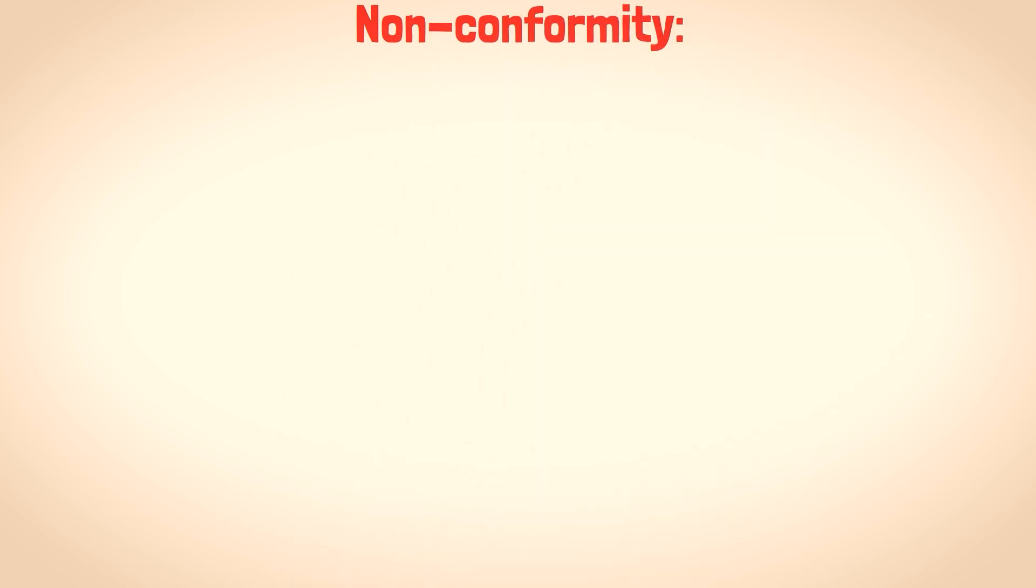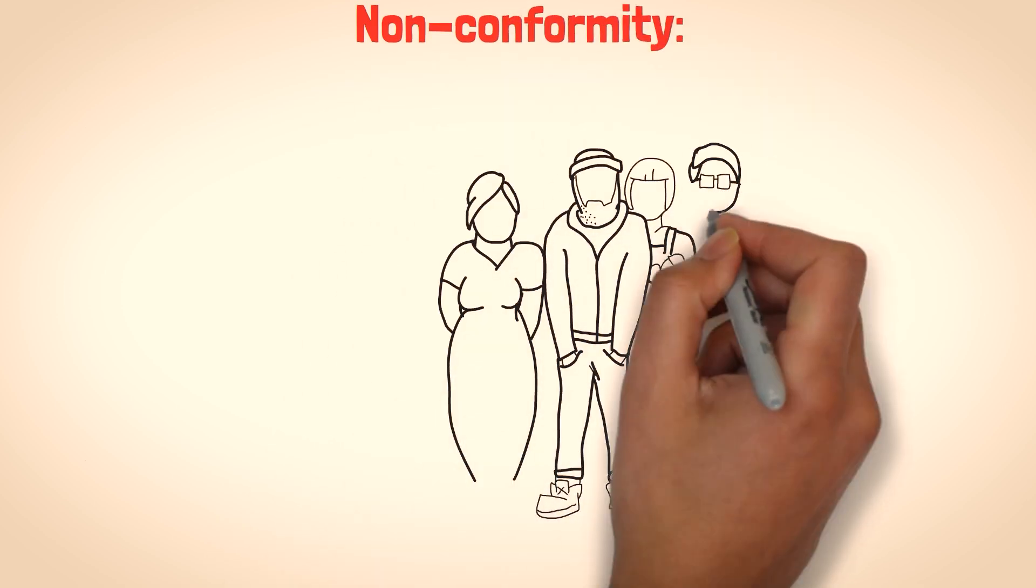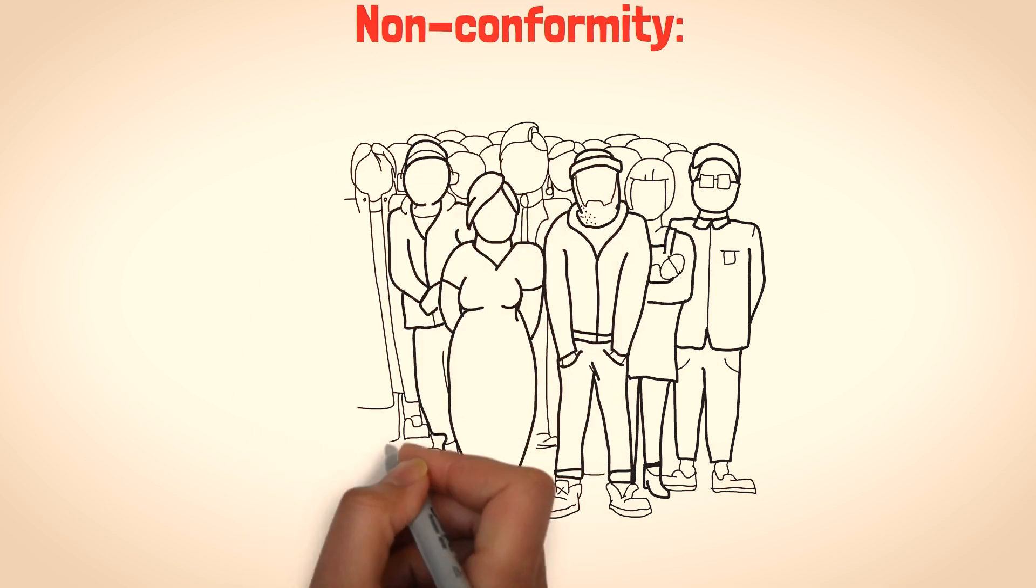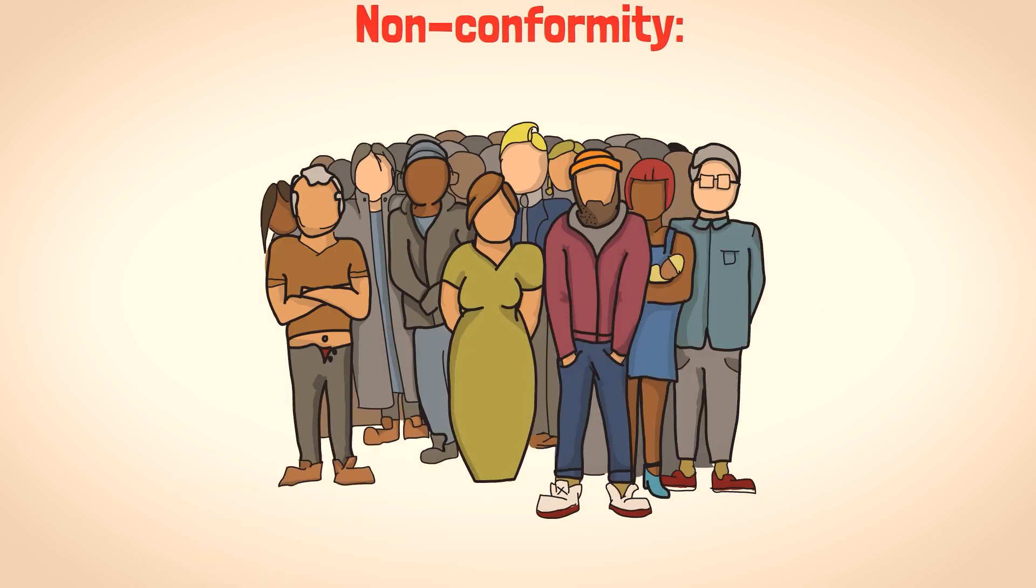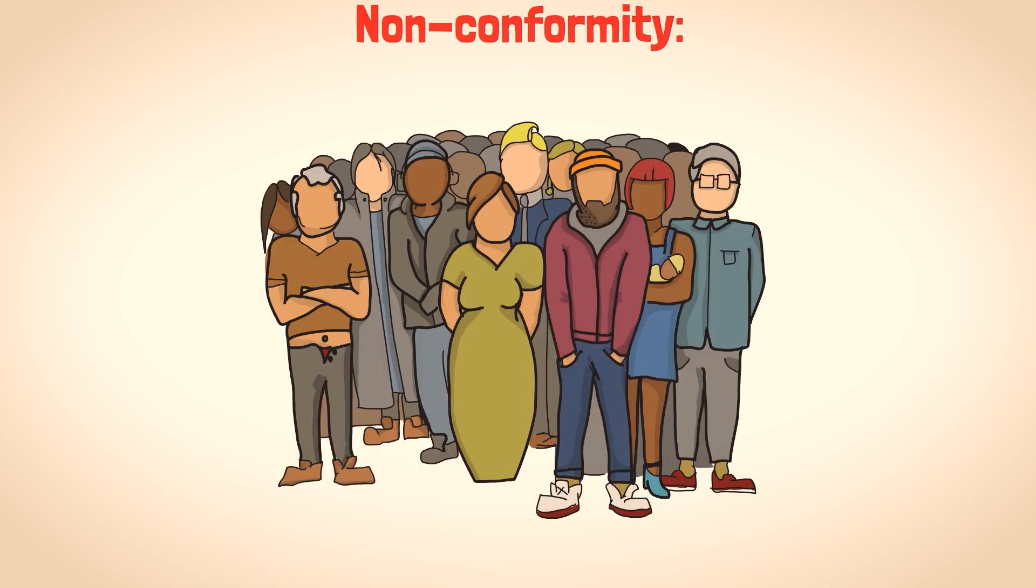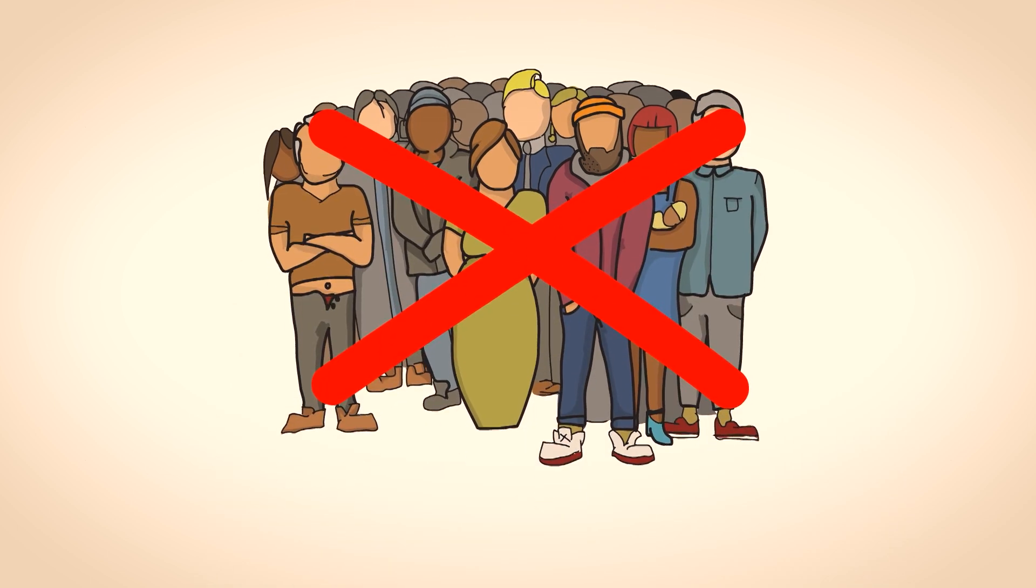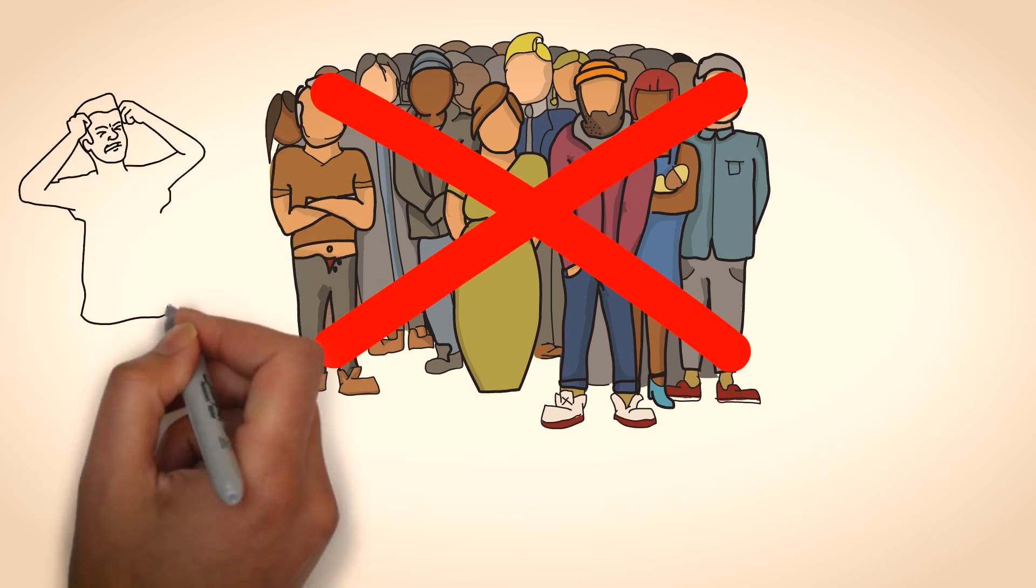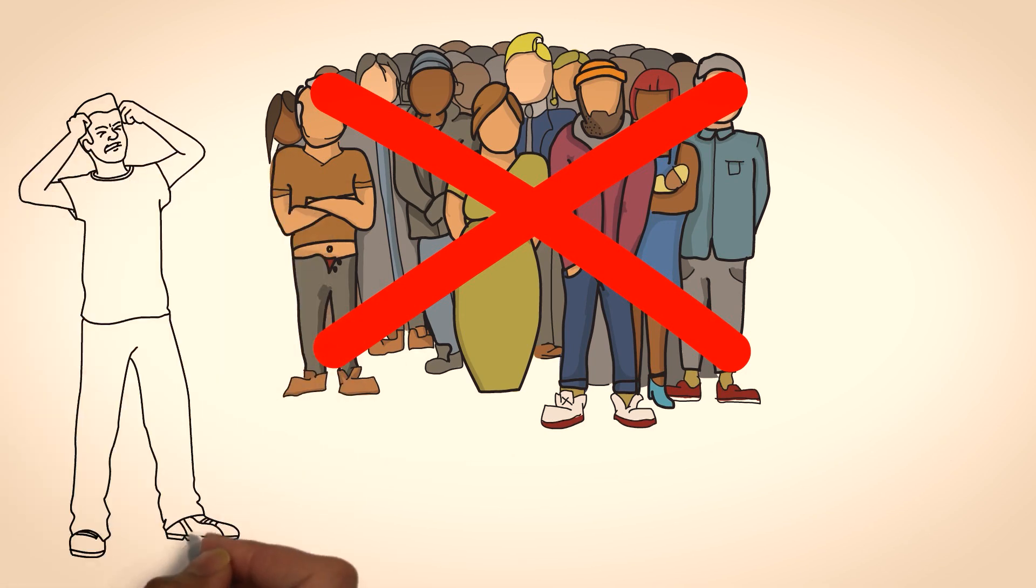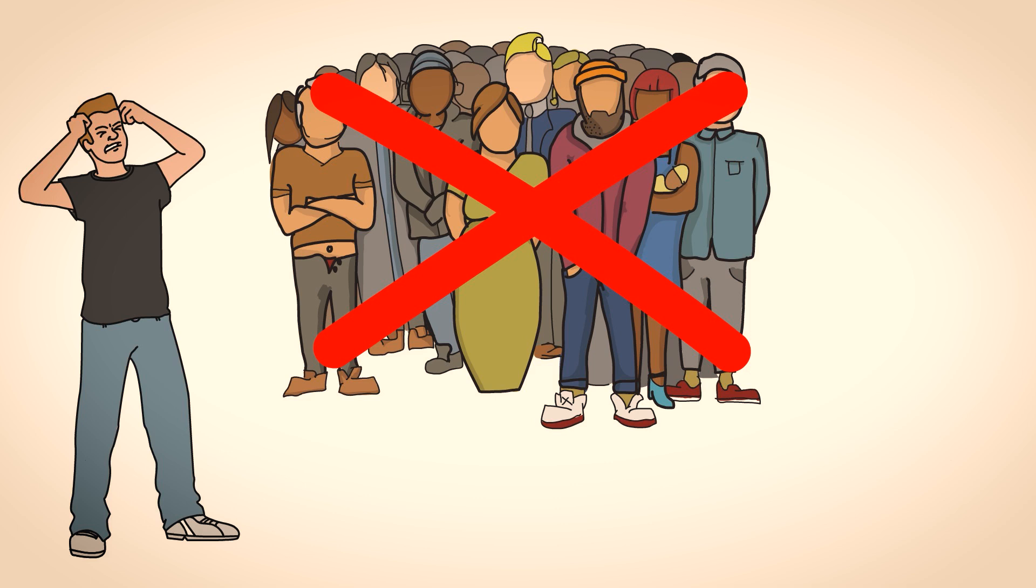Nonconformity. Sigma males typically exhibit a nonconformist mindset and are less influenced by societal norms or expectations. They often forge their path and don't feel the need to conform to others' opinions or demands. This individualistic nature can make it difficult for manipulators to use peer pressure or social influence to manipulate them.